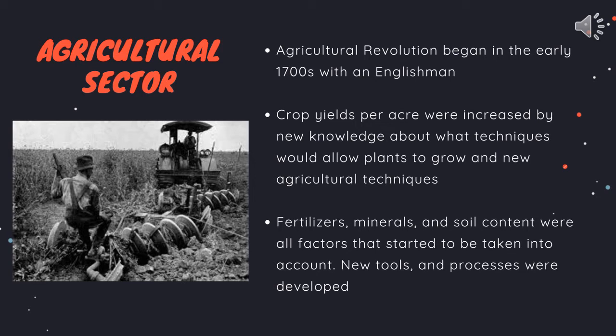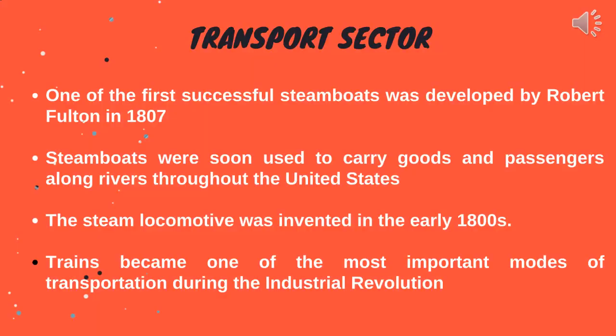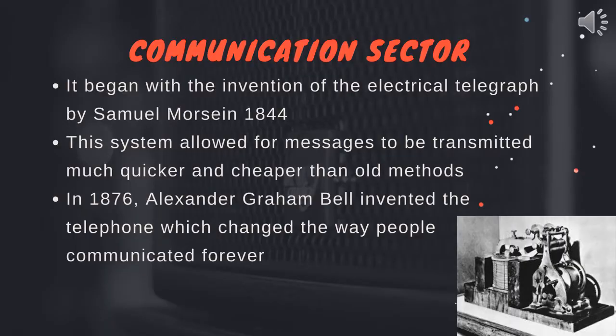New tools and processes were developed. For the transport sector, one of the first successful steamboats was developed by Robert Fulton in 1807. Steamboats were soon used to carry goods and passengers along the river throughout the United States. The steam locomotive was invented in the early 1800s. Trains became one of the most important modes of transportation during the Industrial Revolution.